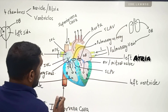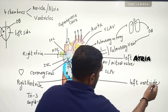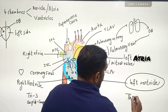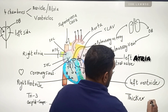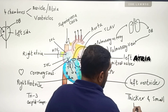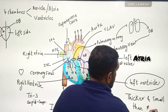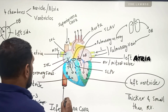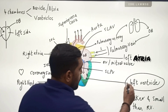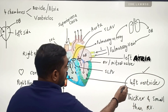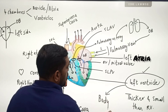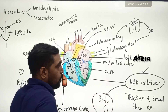When you look at the structure, the left ventricle is more thicker than the right ventricle, and the right ventricle is smaller and thinner than the left ventricle. Why is this so? Because the left ventricle pumps the blood all over the body, that is why it is one of the most important parts.